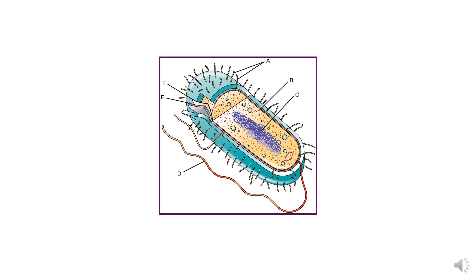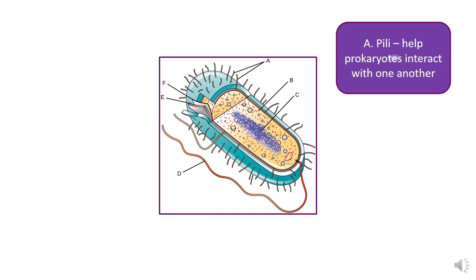This is a 3D picture of a prokaryotic cell — you only need to draw simple 2D diagrams. Here we have the pili, labelled A. These are different from other structures, so don't get confused. The pili help prokaryotes interact with and attach to one another. You'll find out more detail about what they do in the second year of A-level.